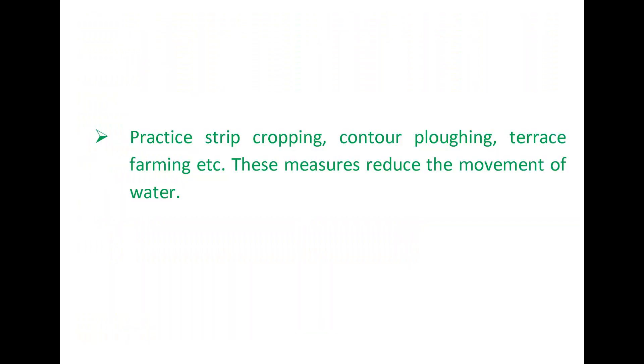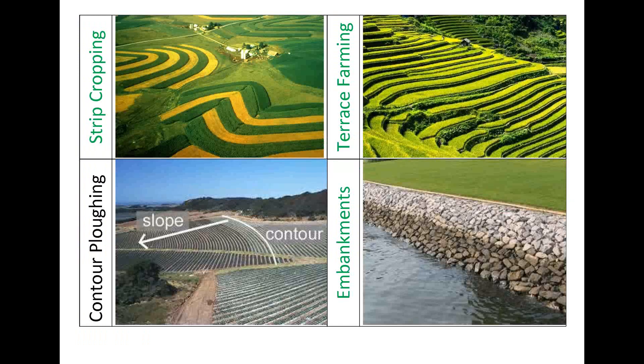Practice strip cropping, contour plowing, terrace farming, etc. These measures reduce the movement of water.